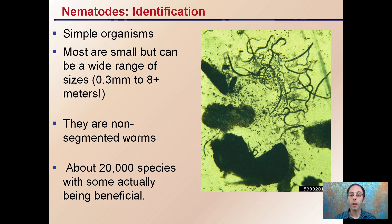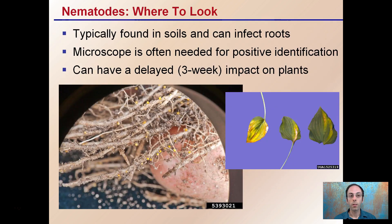They are non-segmented worms — these are animals we're talking about. There are about 20,000 species, with some actually being beneficial. So don't think that all nematodes have negative impacts on plants; there are actually some beneficial ones that can be used to help control other organisms, for example white grubs in lawns.